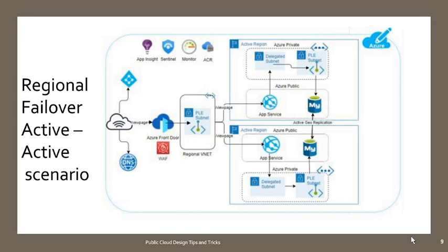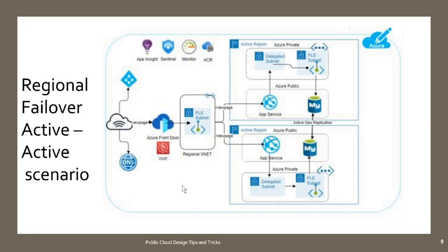Now let's realize a regional failover scenario. Imagine you want to host your web application that stores data in a MySQL database, and you want to make your application more resilient — if one region fails, traffic should be redirected to the second region. You can use Azure Front Door for this. As the request comes from the internet, Front Door enables WAF and DDoS protection and other security features. Since we're using a multi-tenant App Service, which is an Azure public service, and Azure Front Door is a global service, you need a private link endpoint to reach it.